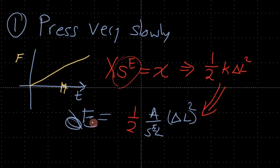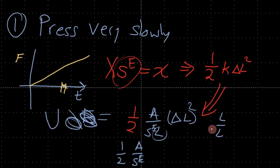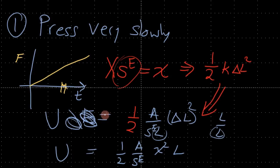We can write this energy as U. If we multiply top and bottom by L, we get one-half times A·S_E, with length squared on the bottom, which gives us strain squared — assuming the strain is constant — times the length. This is the mechanical energy stored in the material due to pressing with force F.